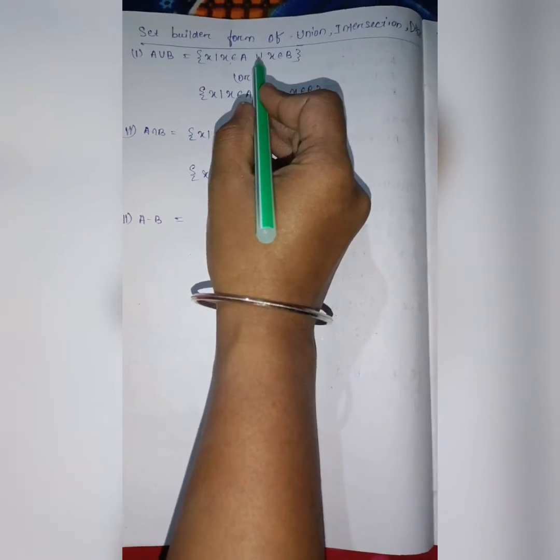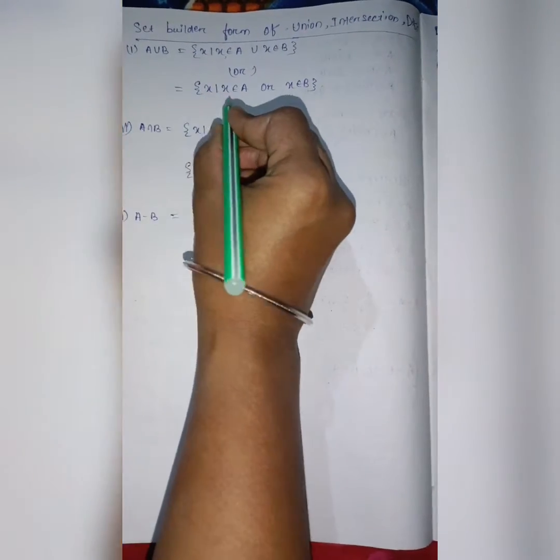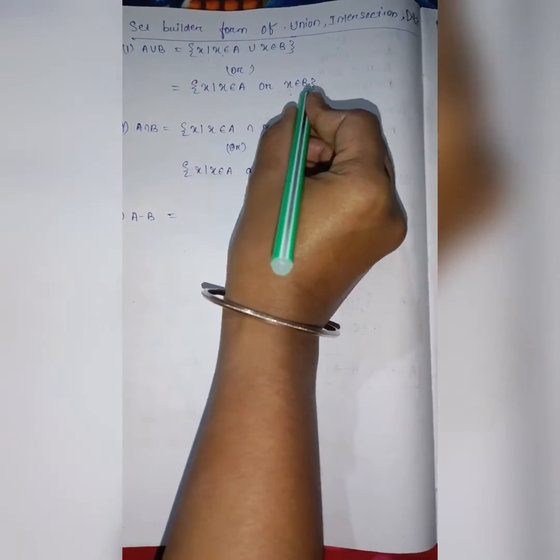Union in other word we told or. So I can write it as x source that x belongs to A or x belongs to B.